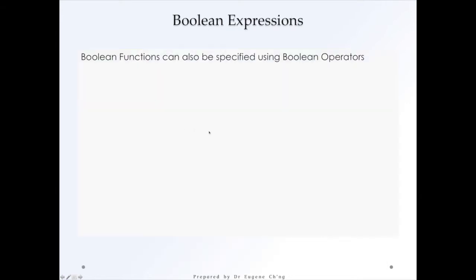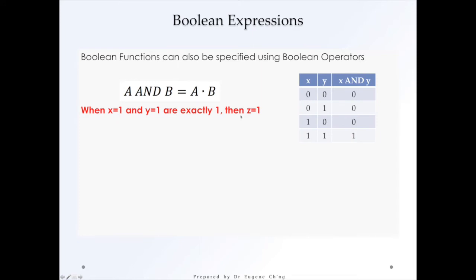Coming to Boolean expressions, we'll look at an example. If it's A and B also in this notation, you can see that when x is one. So if A is one and y is one, B is one. It's exactly one. Then z equals one. So for this particular table, we have x and y, but it's the same thing. So if it's one, if there are two inputs, meaning that there will be four states, as we see in the first lecture.